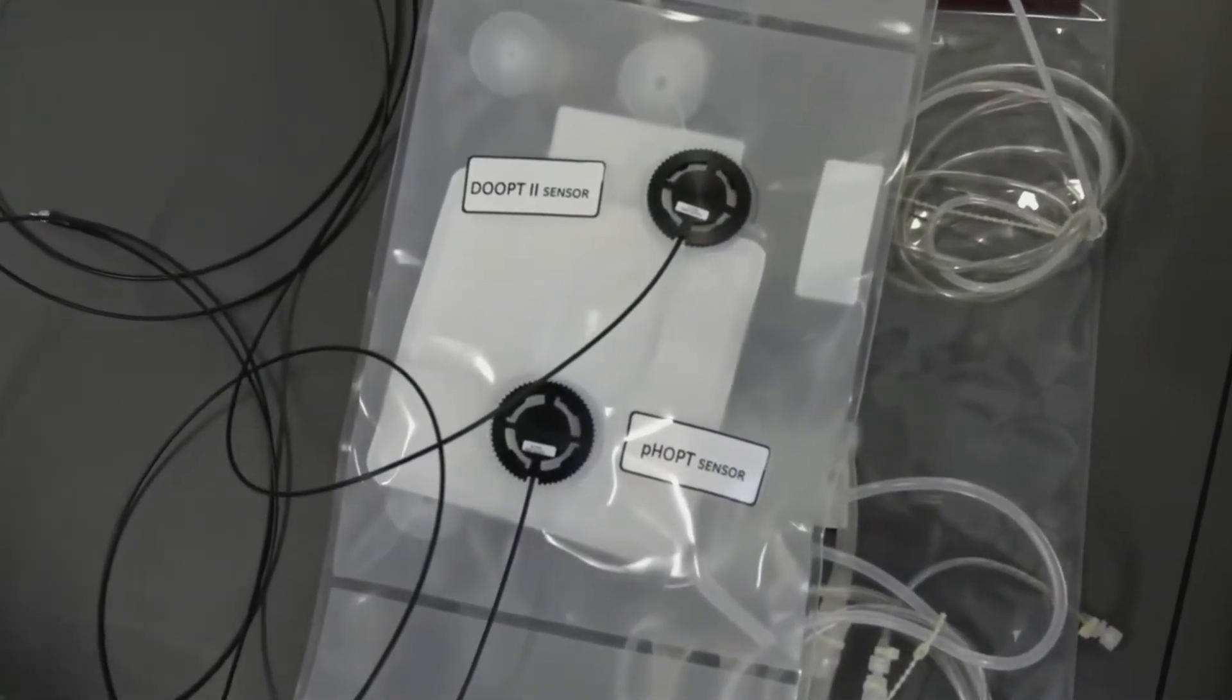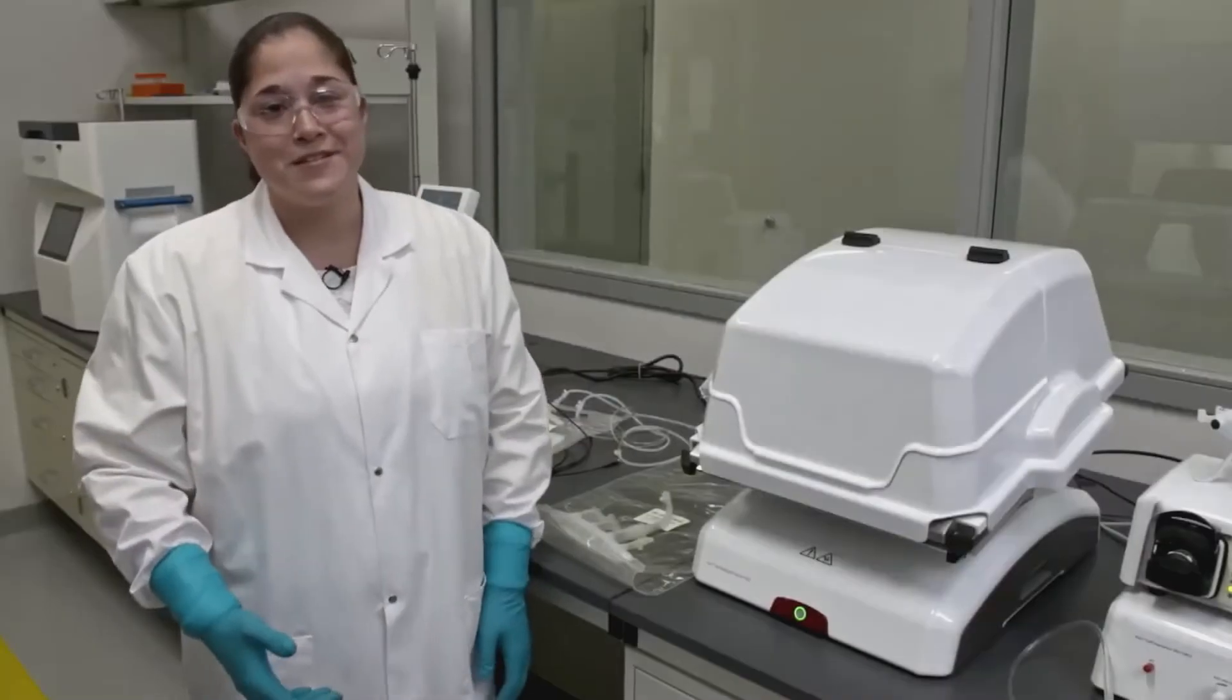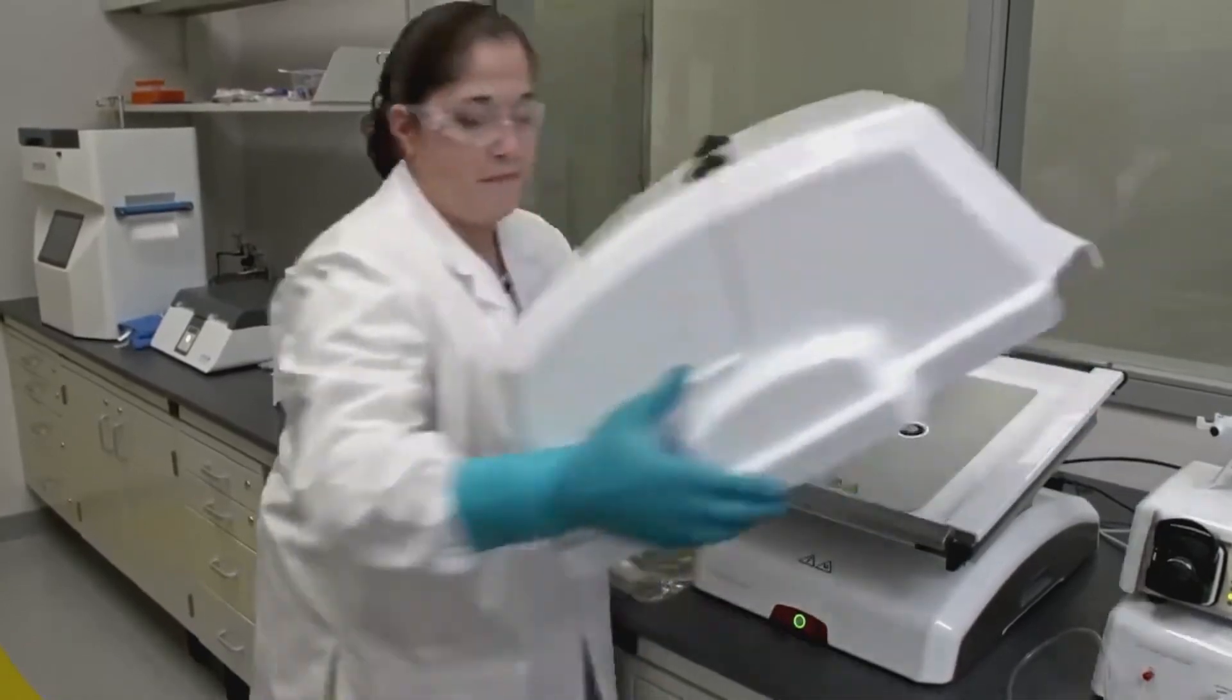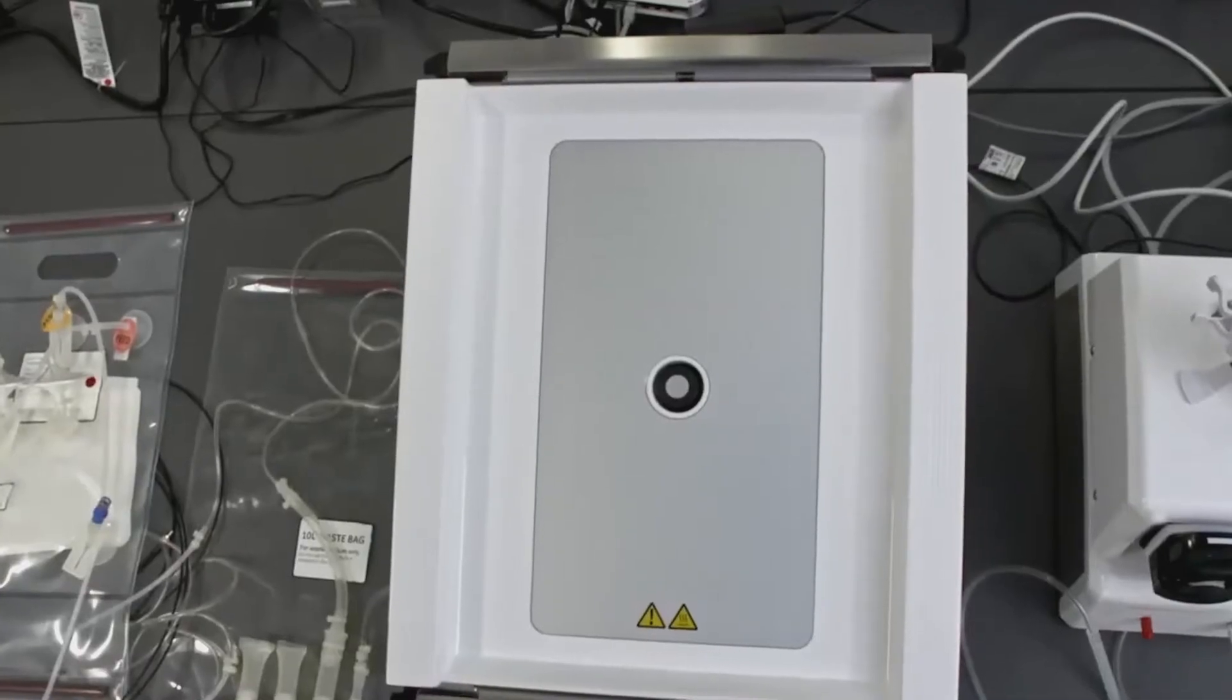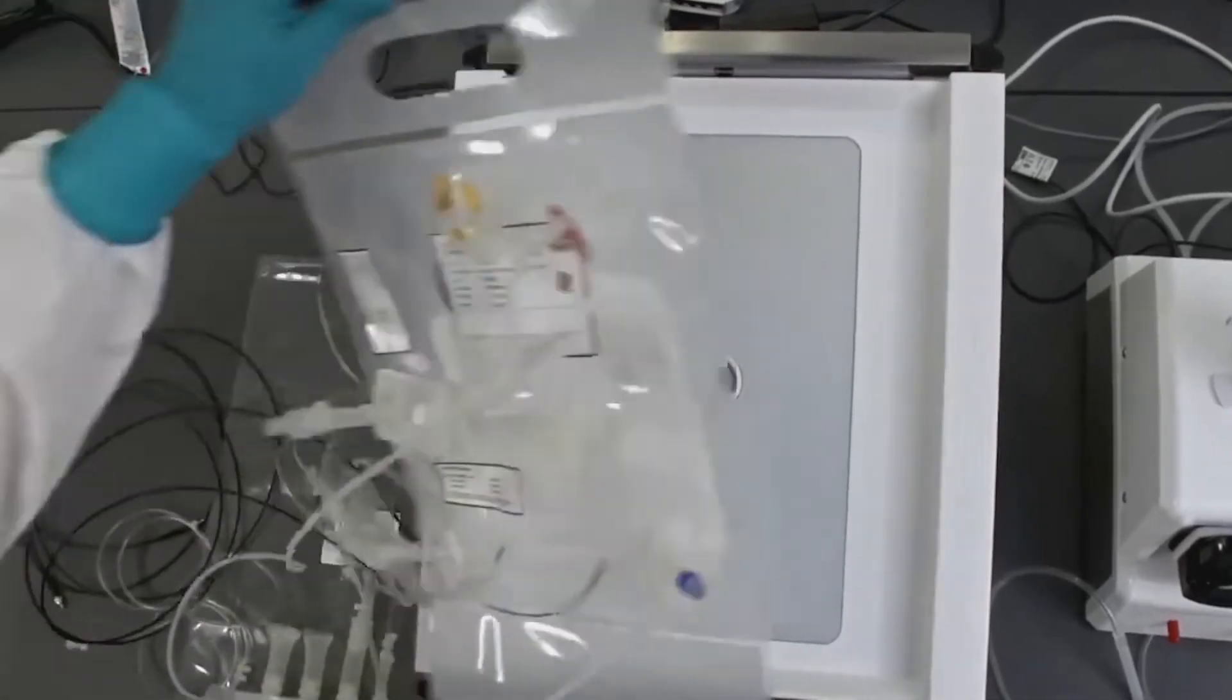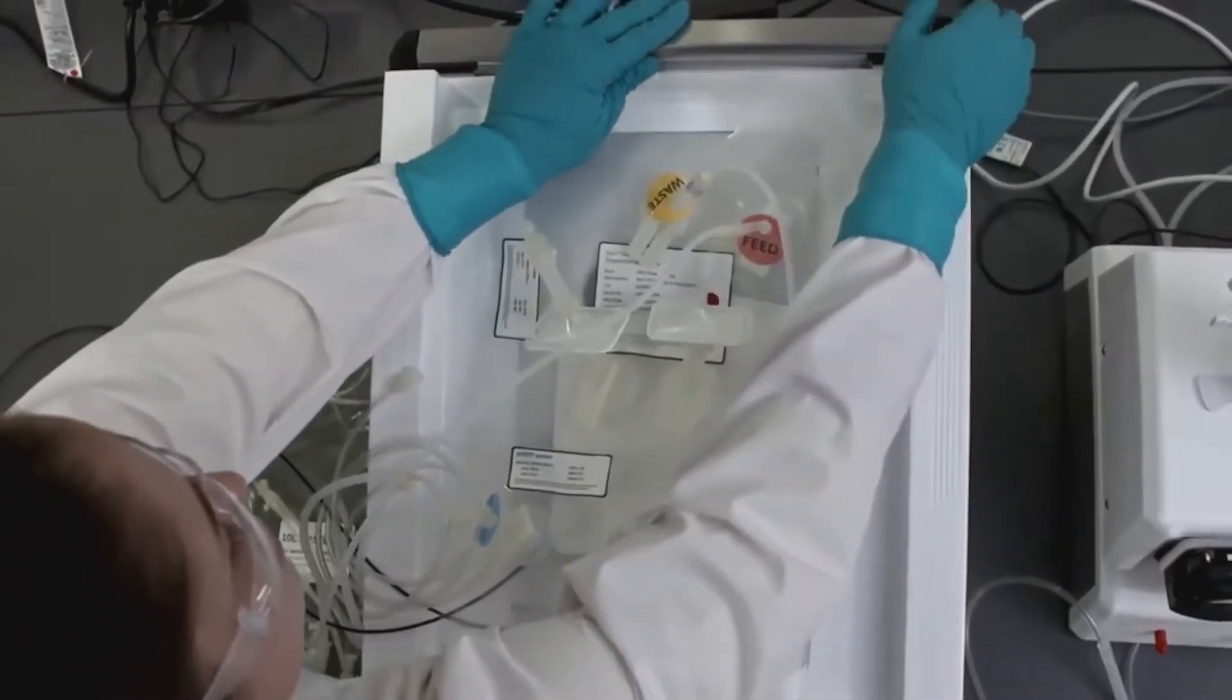You can now connect the cell bag to the rocking platform. To install the cell bag, you'll first remove the cover off the W25 and then connect the cell bag onto the rocking platform by putting the rods into the upper and lower clips.